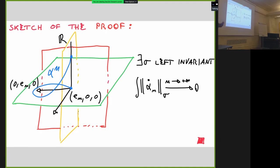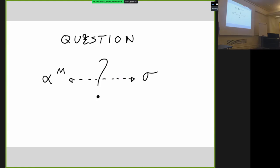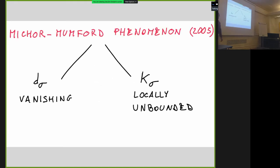Now let us address the last part of the talk: is there a deeper reason related to the metric itself for why these curves α_n have lengths going to zero? To try to answer this, I think it is useful to go back to Michor and Mumford, who in 2005 discovered the following phenomenon: the vanishing of the geodesic distance occurs together with locally unbounded sectional curvature. This means that at one point, when you look at all sectional curvatures over all planes in the tangent space, this family is unbounded.